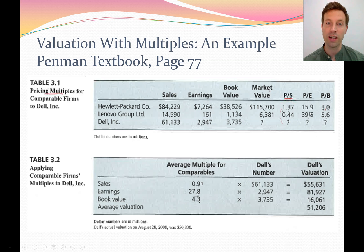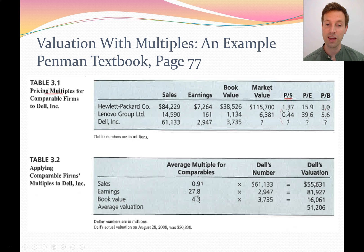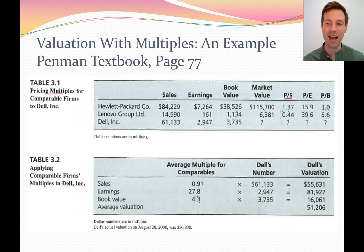We can do the same for the average price to earnings ratio and the average price to book ratio, and we get three very different valuations. The highest values Dell at $81 billion and the lowest at $16 billion. For an investor, there's a huge difference between paying $80 billion and $16 billion for a company. So we've seen that this price multiples method is very quick — I was able to value Dell within two minutes — however it's also very inaccurate. Just changing the ratio gives valuation differences of $60 billion.